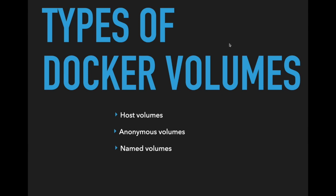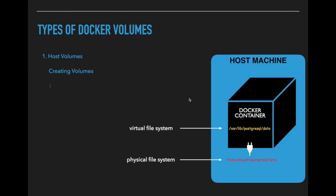There are three types of Docker volumes: host volumes, anonymous volumes, and named volumes. We can create Docker volumes using the docker run command with the option -v, which refers to volume, and we connect the folder in the physical file system to the folder in the file system of the Docker container. This way we can create host volumes.